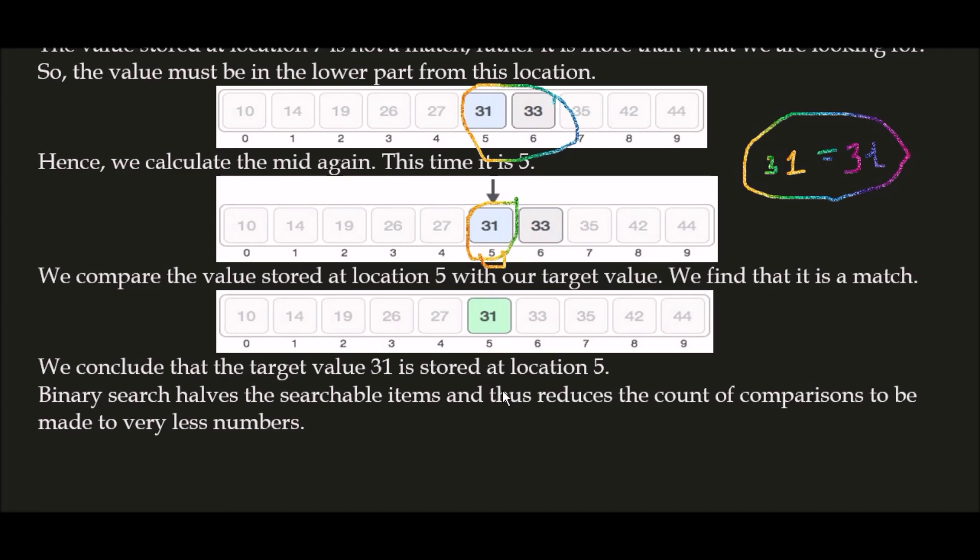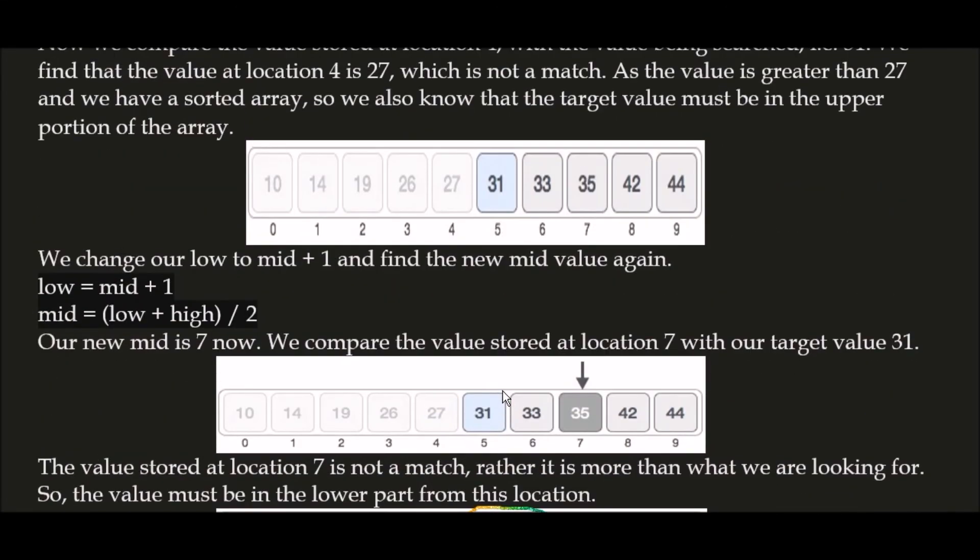So here we saw that when we divided the array, a lot of memory space was saved because we didn't do any operations or iterations on the elements from 0 to 4. This way, with the help of binary search, you can very easily find items. Binary search is a very efficient algorithm, and the precondition for binary search is that your array should be in sorted manner.